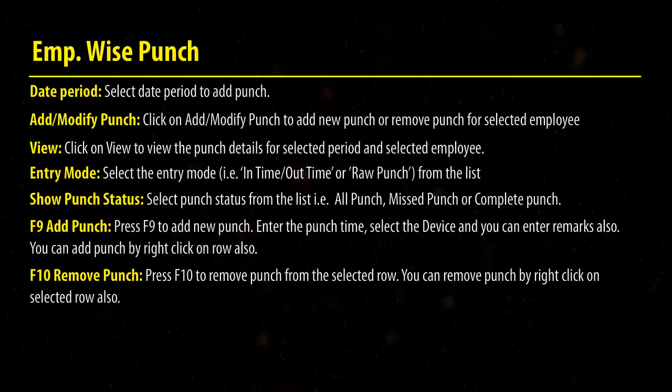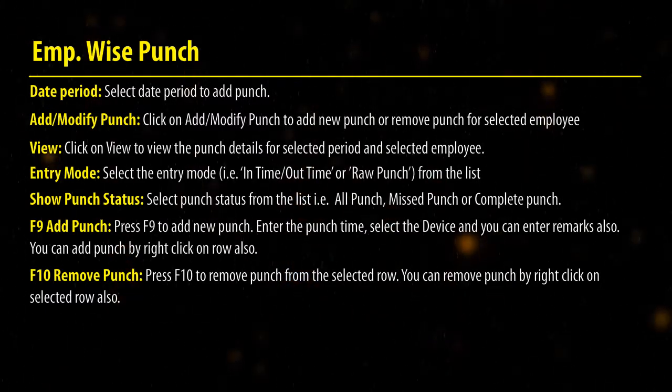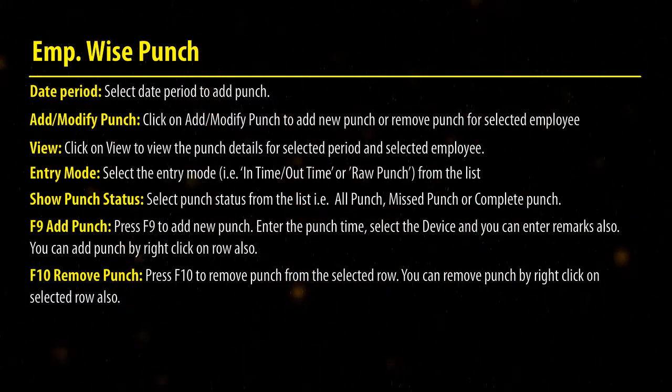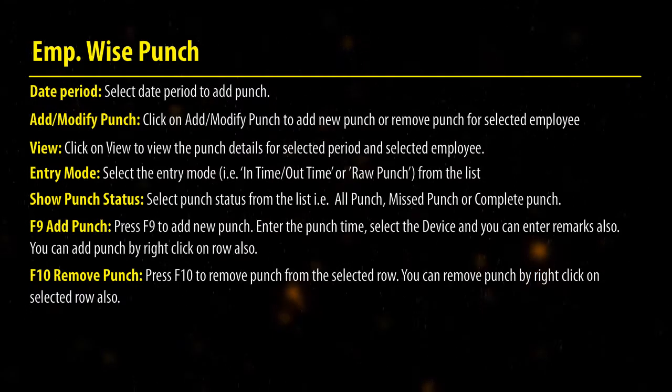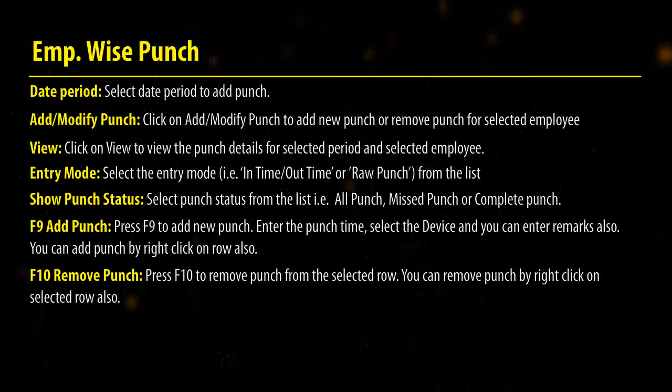Press F10 to remove the punch from the selected row. You can also remove the punch by right-clicking on the selected row.